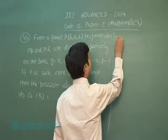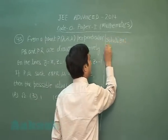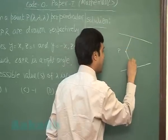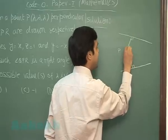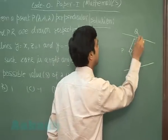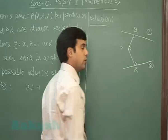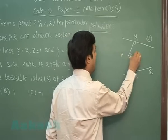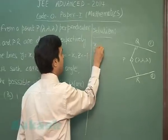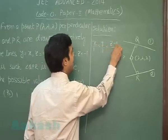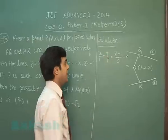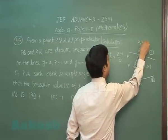So we can start it as two lines are given, a point P from where perpendiculars are drawn such that angle QPR is also right angle. This is also right. Equation 1, equation 2. Fine. P is given to me (λ, λ, λ). Line 1 is given to me x/1 = y/1 = (z-1)/0, say equal to k. So point Q can be taken as (k, k, 1).